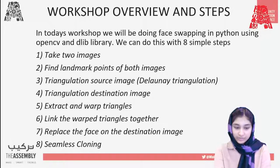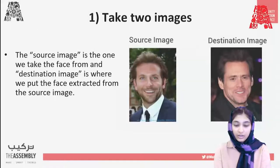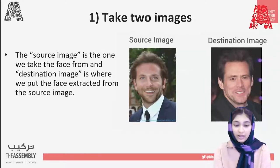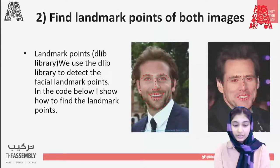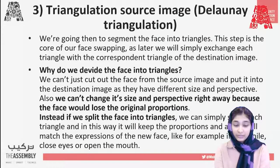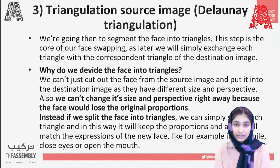First, we need to take two images — a source image and a destination image. Then we'll be finding the landmark points of both images using the Dlib library to detect the facial landmark points. After that, we'll be doing the step of triangulation using Delaunay triangulation on the source image. We'll segment the face into triangles, which is the core part of our face swapping.